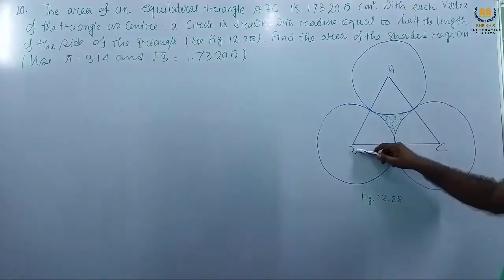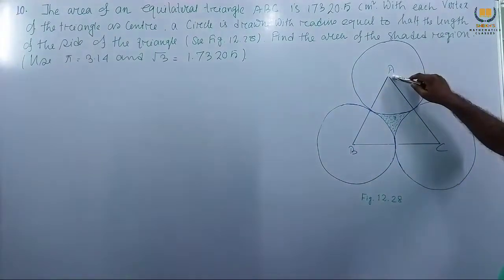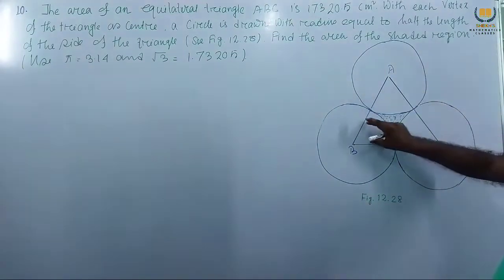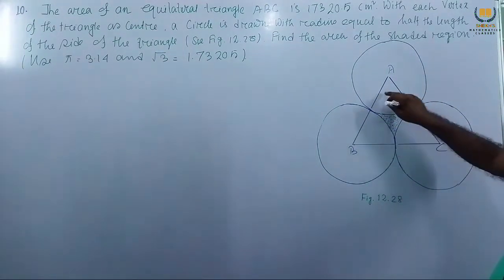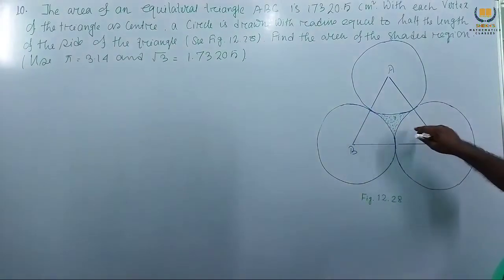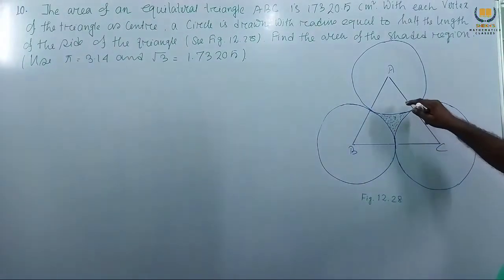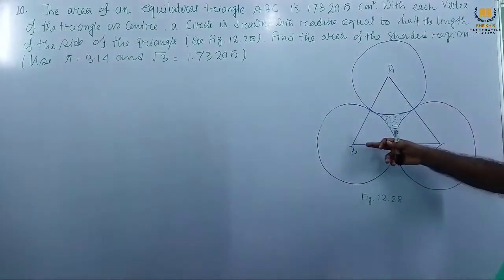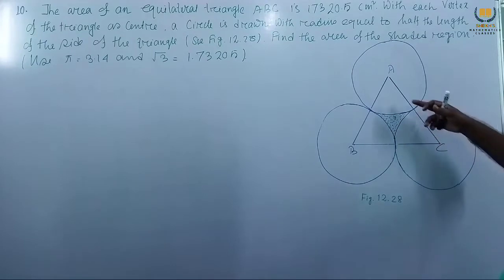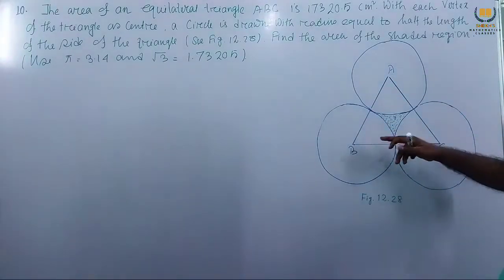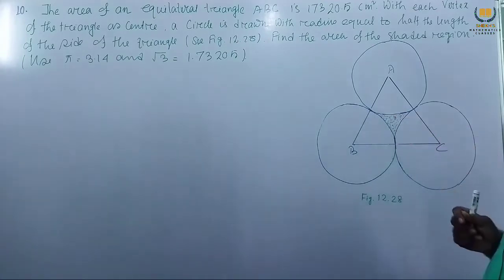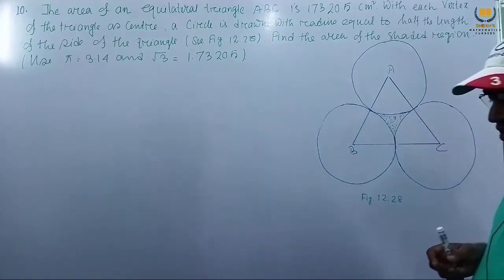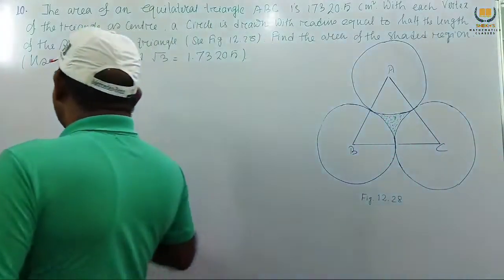First, we consider the area of the triangle. These parts inside are sector areas. If we take the whole area of the triangle and subtract the three sector areas, we ultimately get the shaded portion. Now we start this problem.